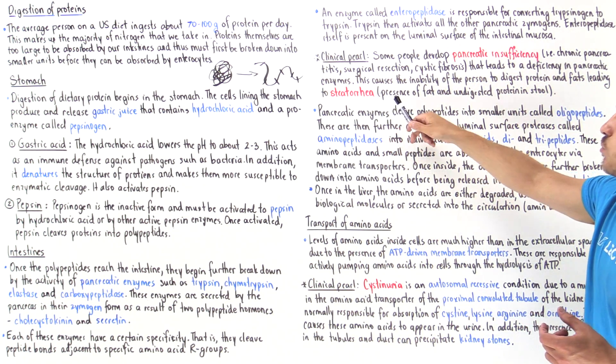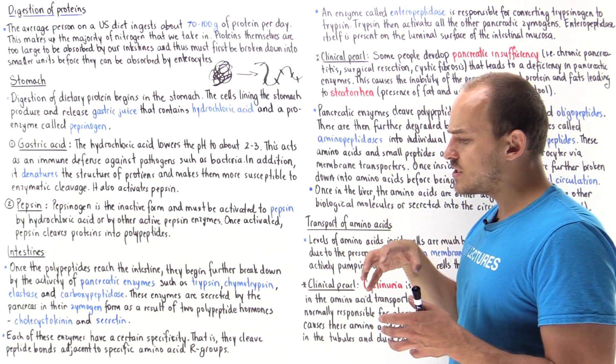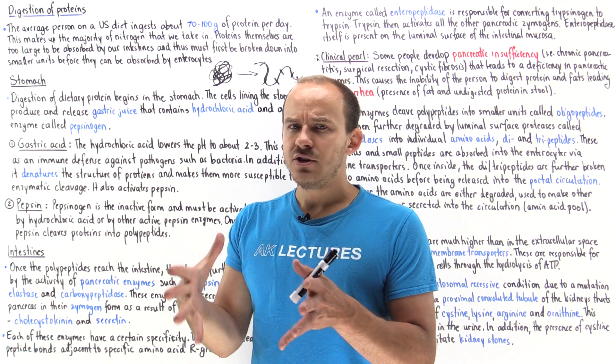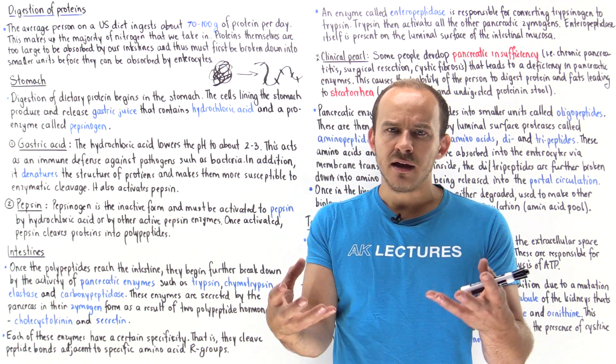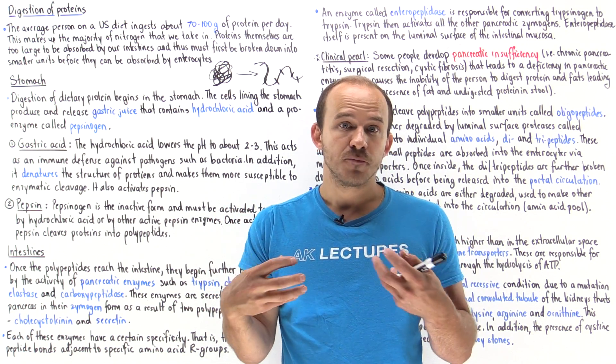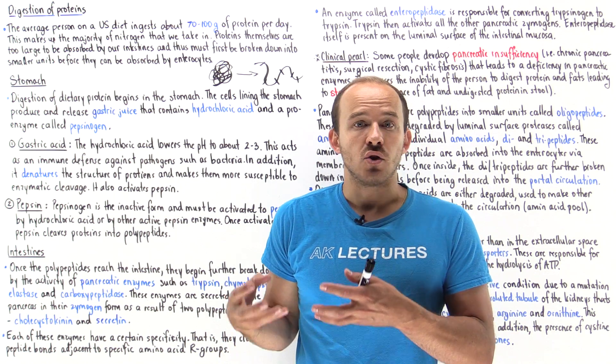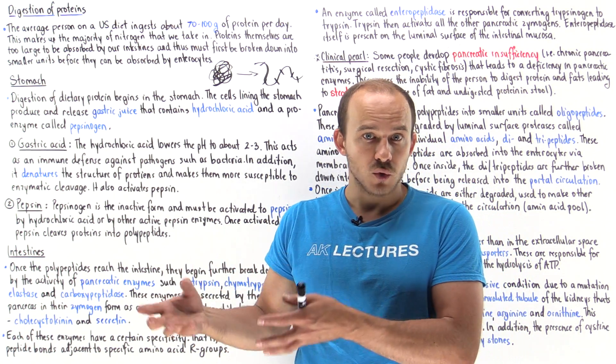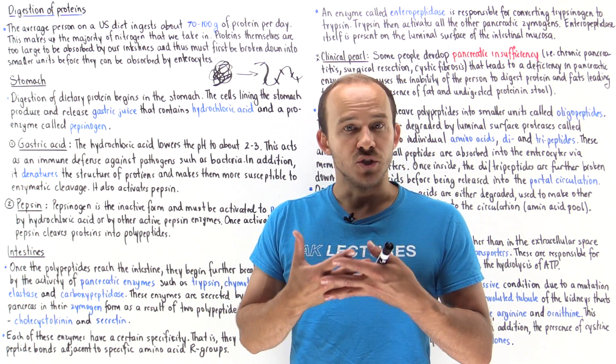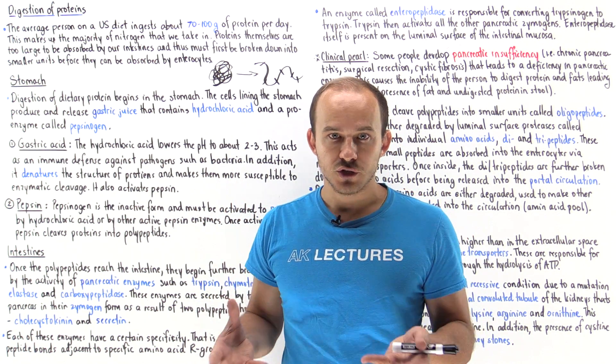Steatorrhea is the presence of fat and undigested protein within the stool. Steatorrhea causes the formation of these very large and pale and oily looking stools that are very difficult to flush. This actually becomes a problem because if we can't digest and break down all those macromolecules—proteins and fats—we're not going to be able to absorb them into the body, and this can actually cause malnutrition.